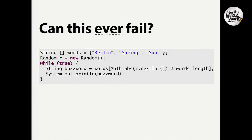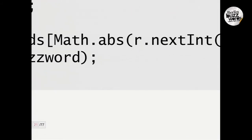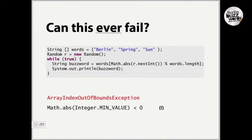The catch is this function — Math.abs. The absolute value of a number, of an integer. The catch is Math.abs can actually return a negative number, which many people wouldn't think possible. But if you pass it a min value, there is no positive counterpart of min value within the int range, so it just returns the min value. So abs is not returning a positive number — it returns the negative number.